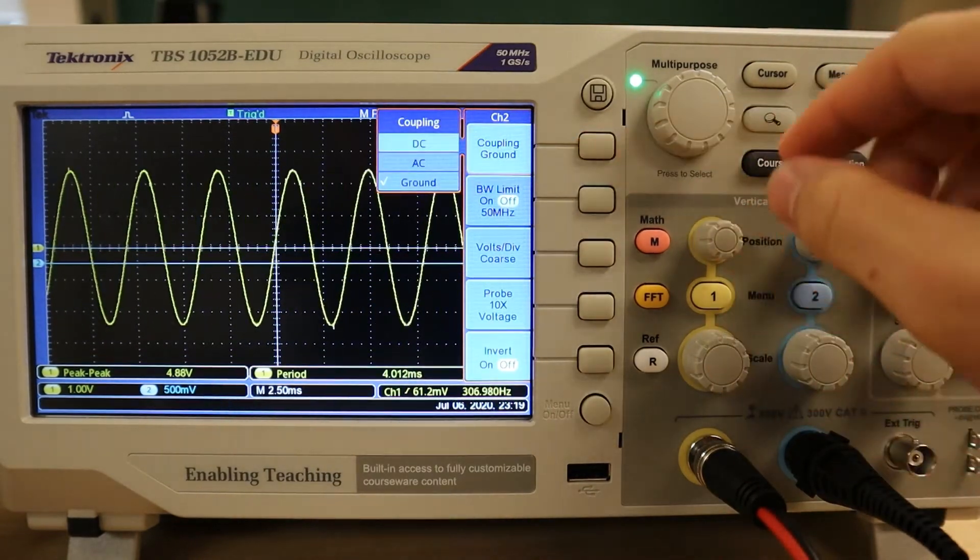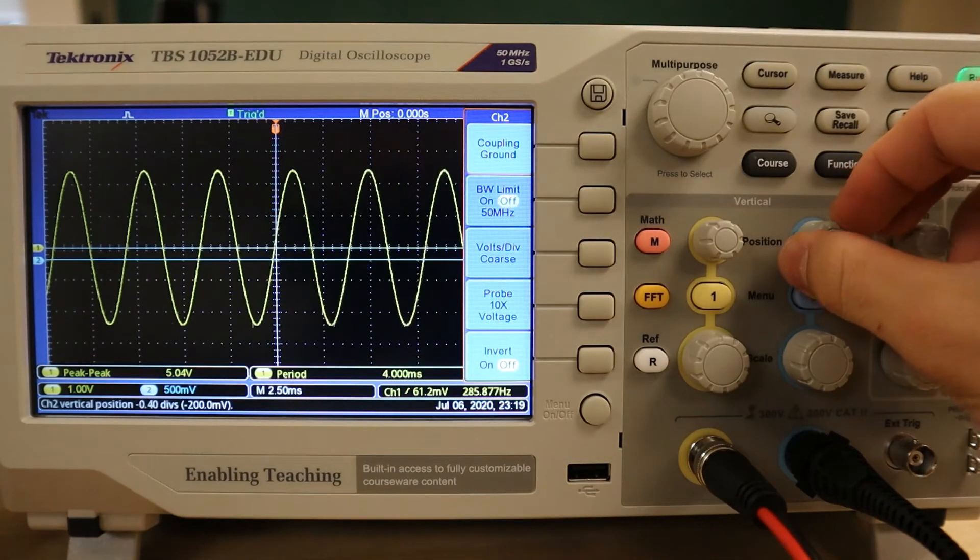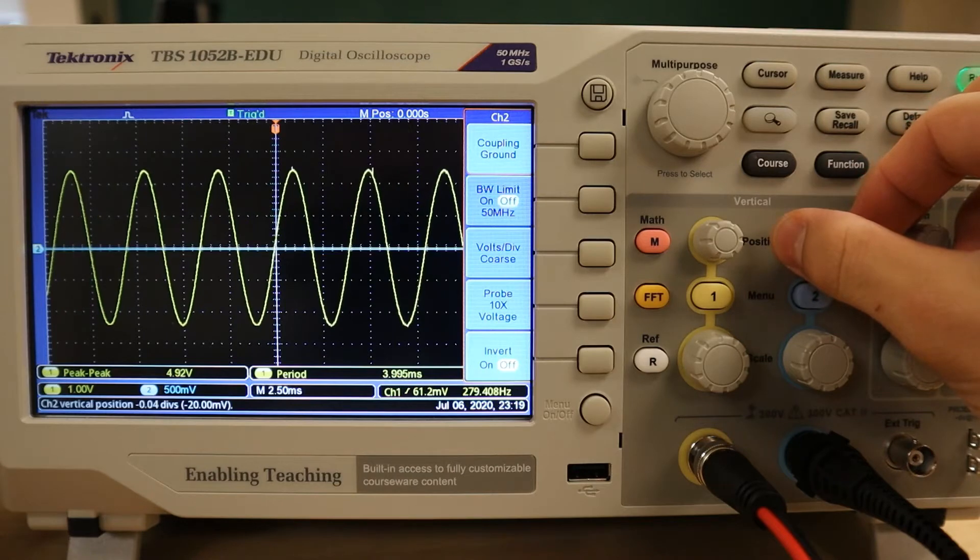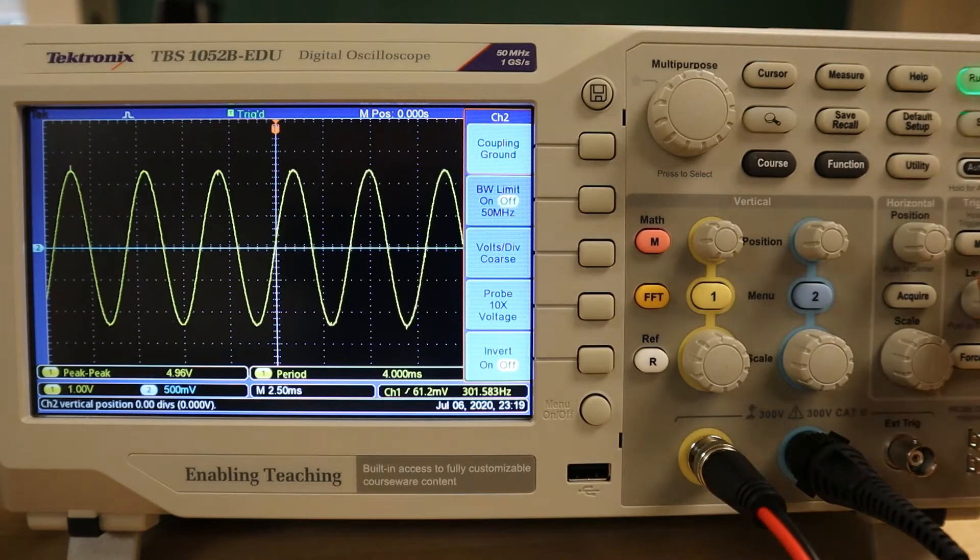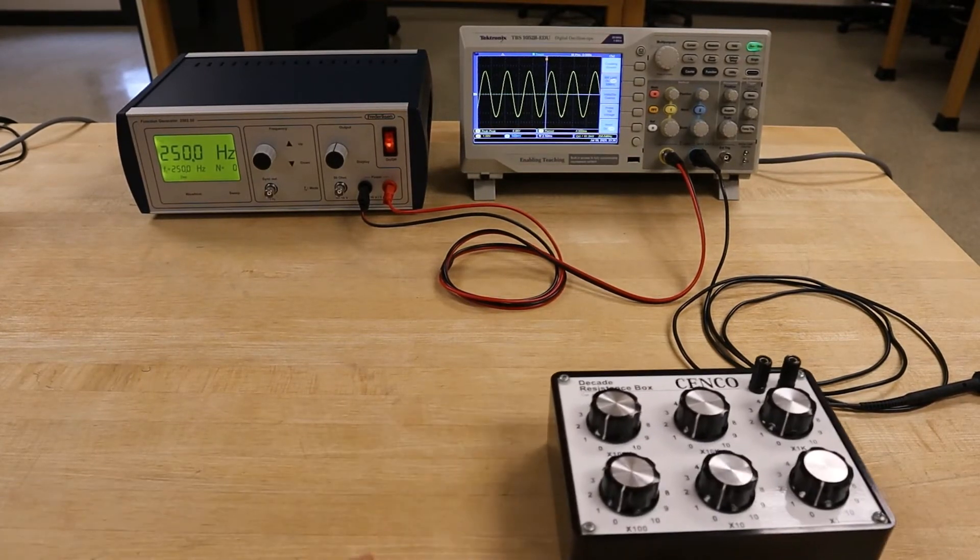Just as before, we'll center the trace by setting the coupling to ground and moving the trace position to a zero point. With the second channel of the oscilloscope moved back to AC coupling, we'll construct a simple RC circuit with the function generator turned off.